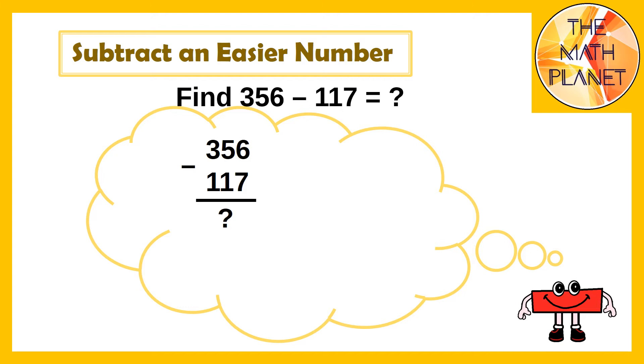So instead of solving this equation, I will change 117. I'll subtract 3 more to make it 120. Now I will solve this subtraction equation, which gives me 236.